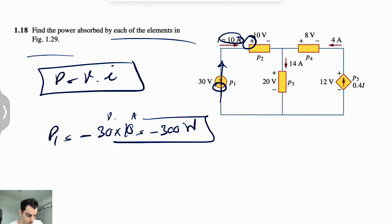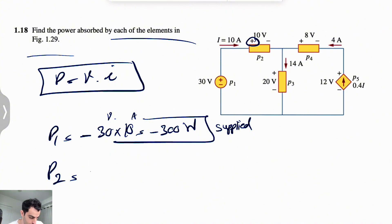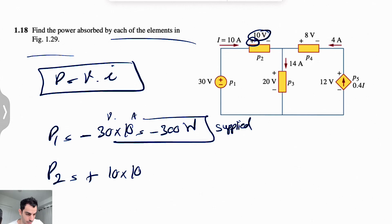That's for P1 — the negative shows that the power is actually supplied. So let's move on to P2, the one that we have right here. We can see that the current is entering the positive part, so it will be positive. Voltage times current: the voltage is 10, current is 10 amps, and this is going to give us positive 100 watts.